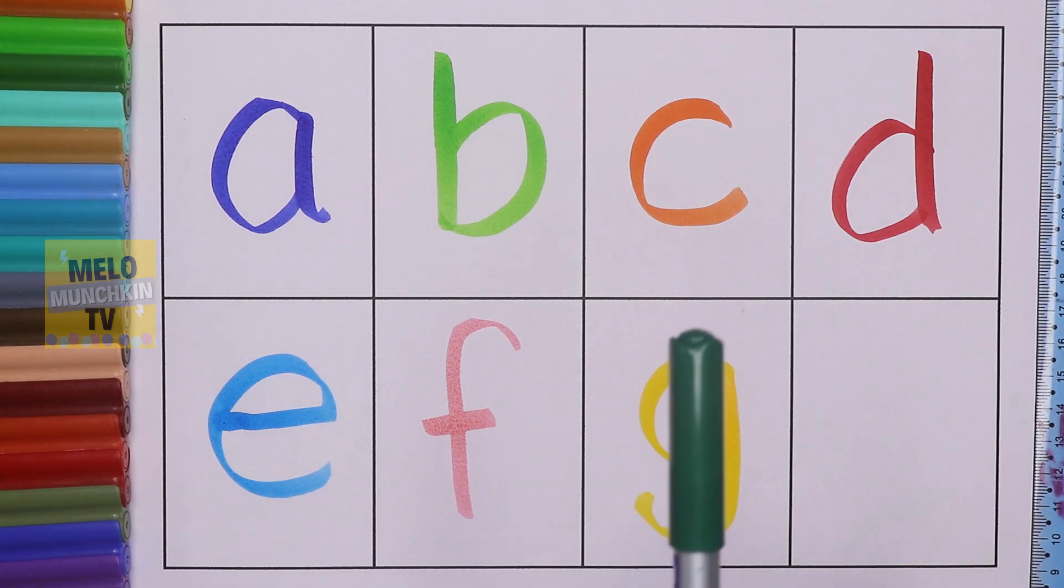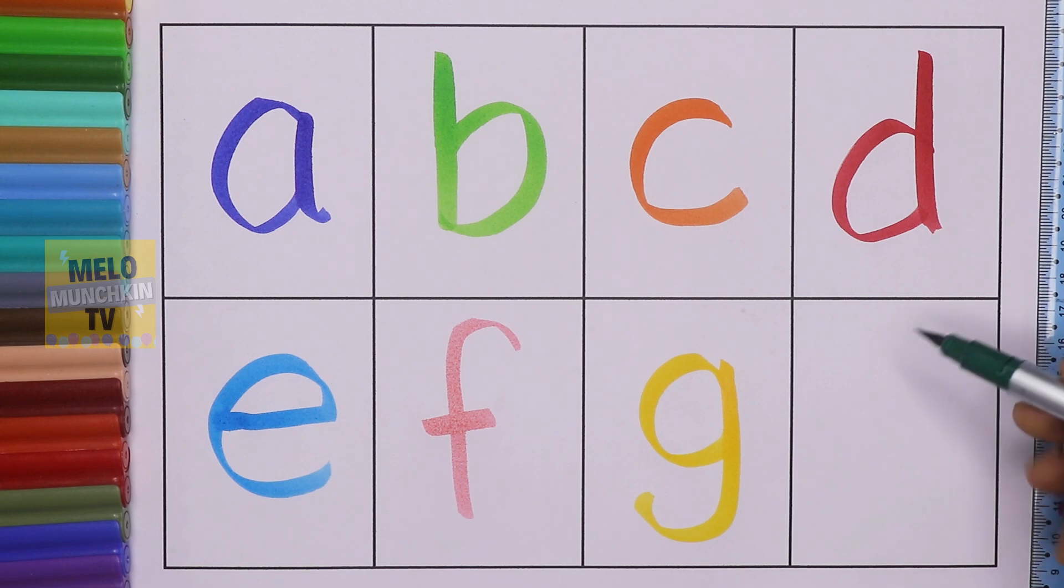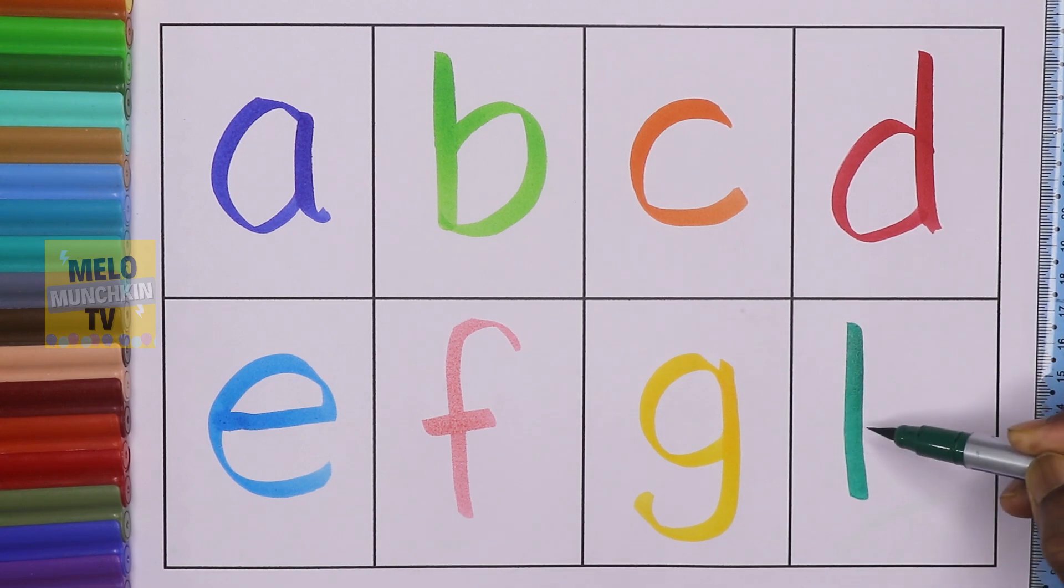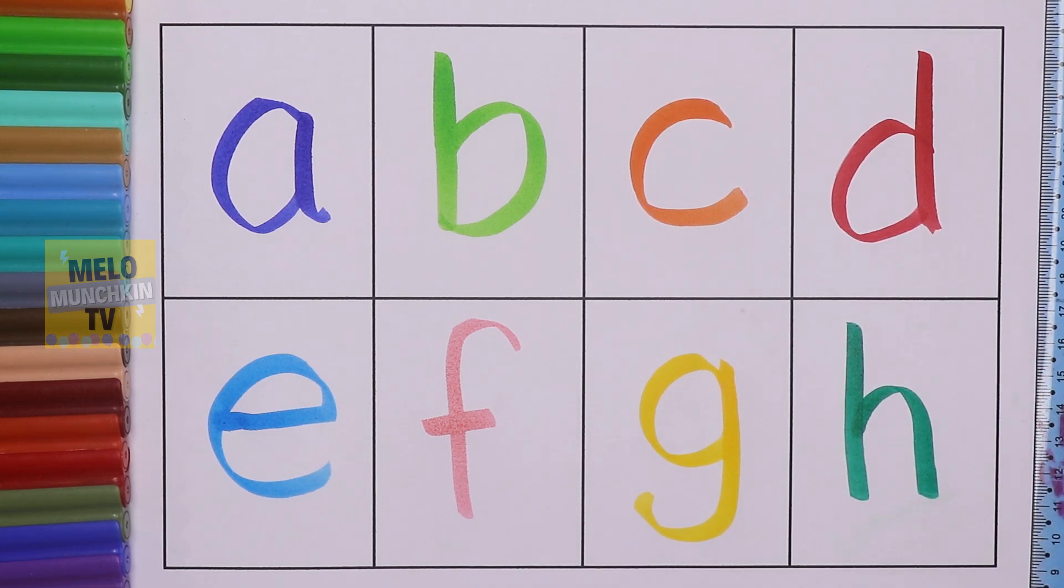And finally dark green color to write small h. H for house. So hence we've completed alphabets from A to H in small letters.